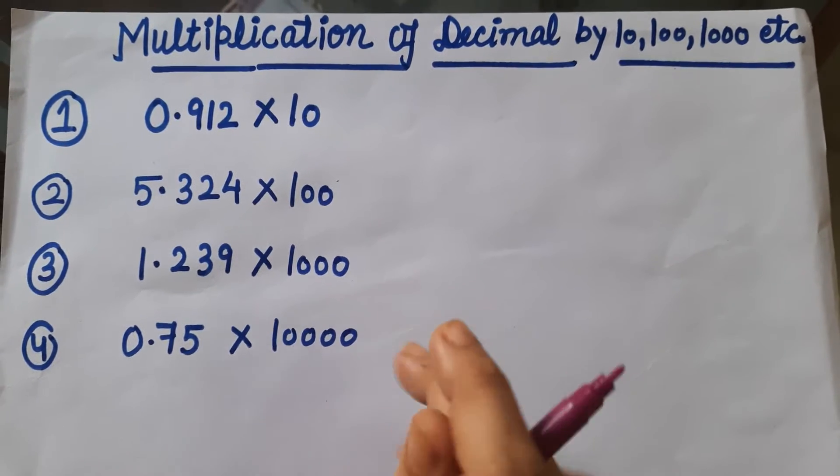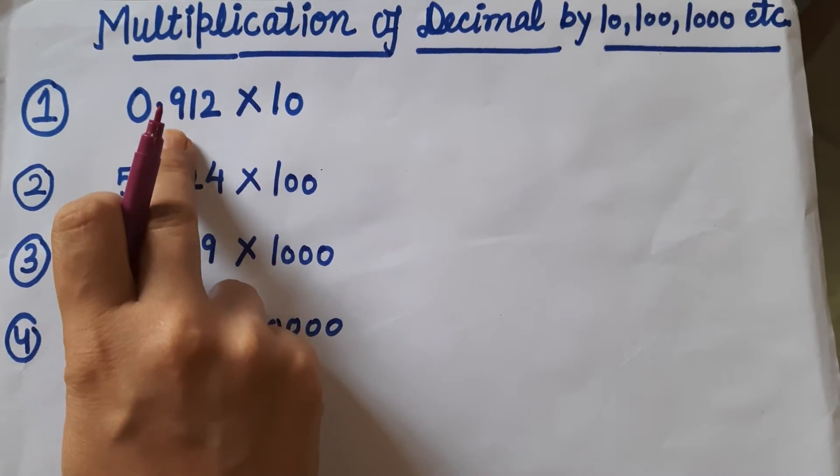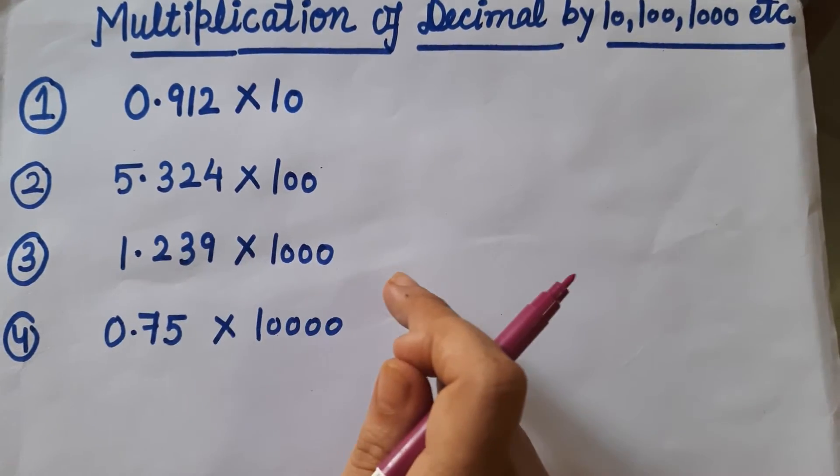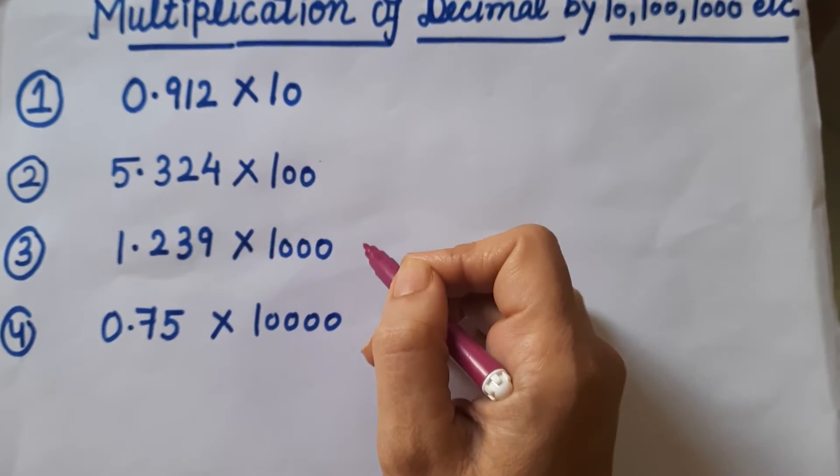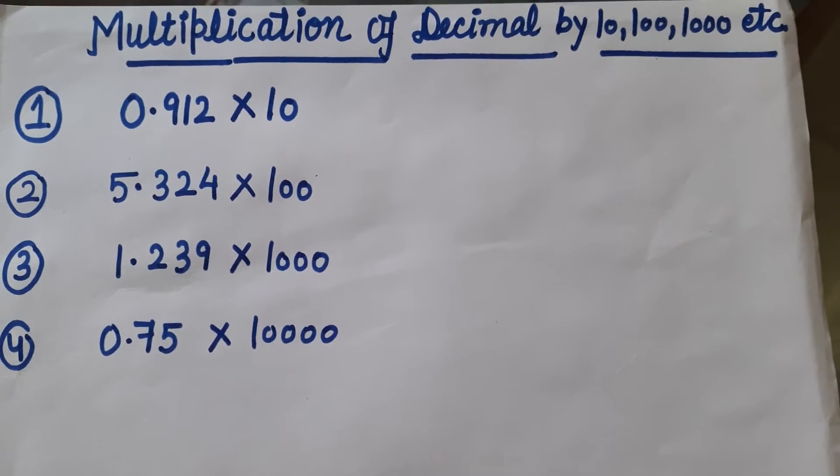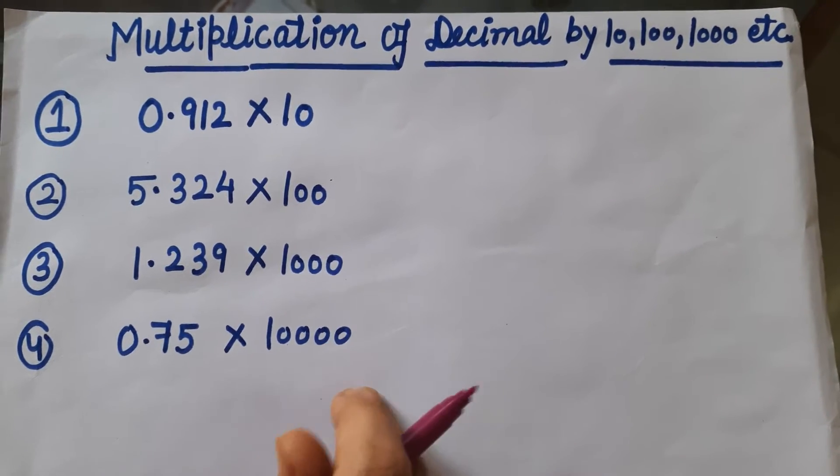Hello my dear friends and students. Today's topic is multiplication of decimal numbers with 10, 100, 1000, and 10,000. What answer will come directly? How can we solve it? Today we will learn about this.